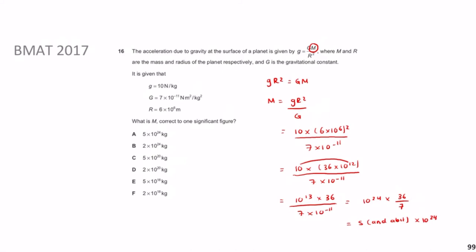We know 7 goes into 35 five times, so 36/7 is approximately 5-and-a-bit times 10²⁴. Looking at the answer options, the only ones with 10²⁴ are relevant, and it clearly isn't 2 — it's more likely 5. Correct to one significant figure, 5-and-a-bit rounds down to 5. So M ≈ 5 × 10²⁴. This was great revision of indices and significant figures.